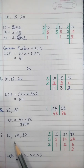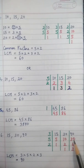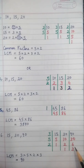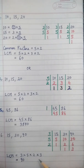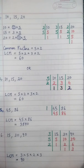Sum 6: 15, 30, and 90. Factorize by 3: 3 fives are 15, 3 tens are 30, 3 thirties are 90. Then factorize by 5: 5 ones are 5, 5 twos are 10, 5 sixes are 30. Then by 2: 2 ones are 2, 2 threes are 6. LCM = 3 into 5 into 2 into 3 = 90.